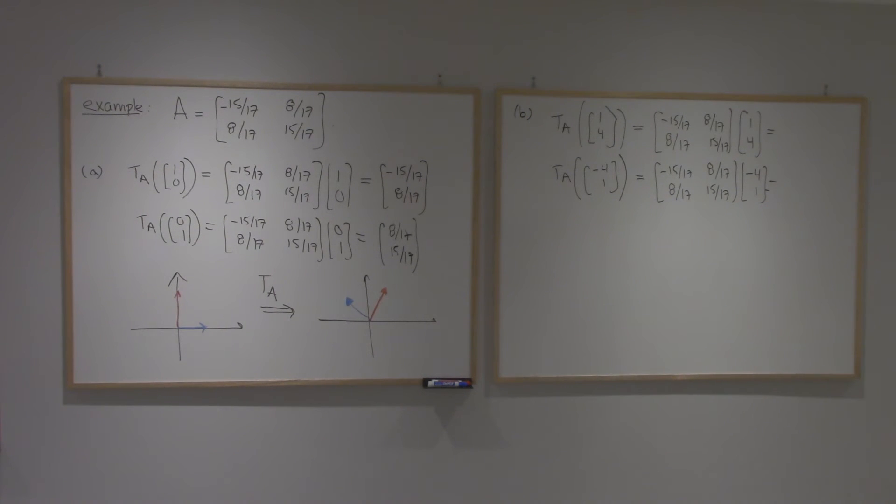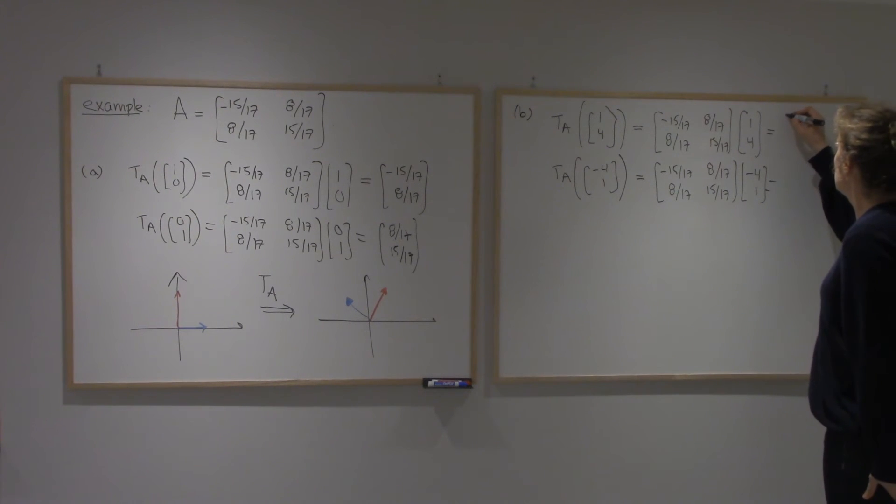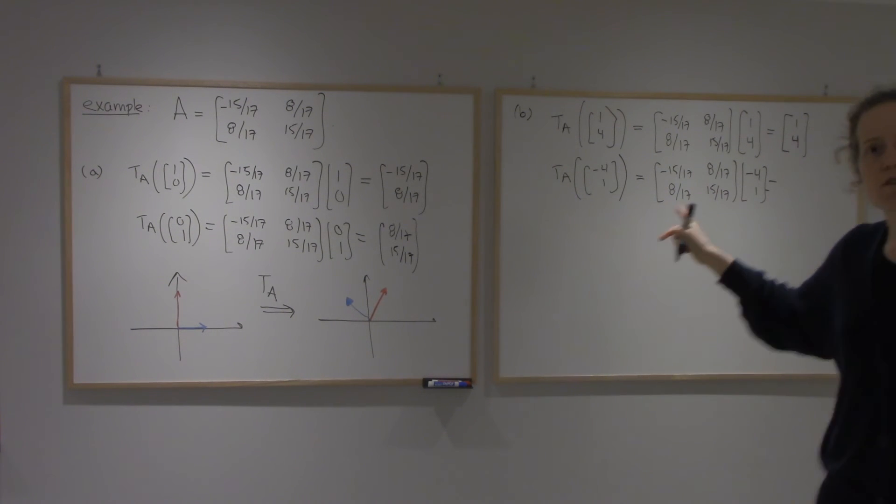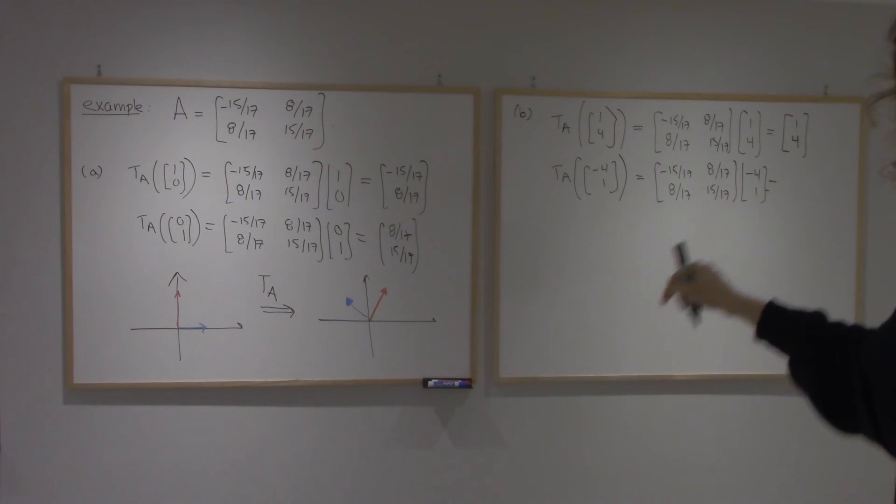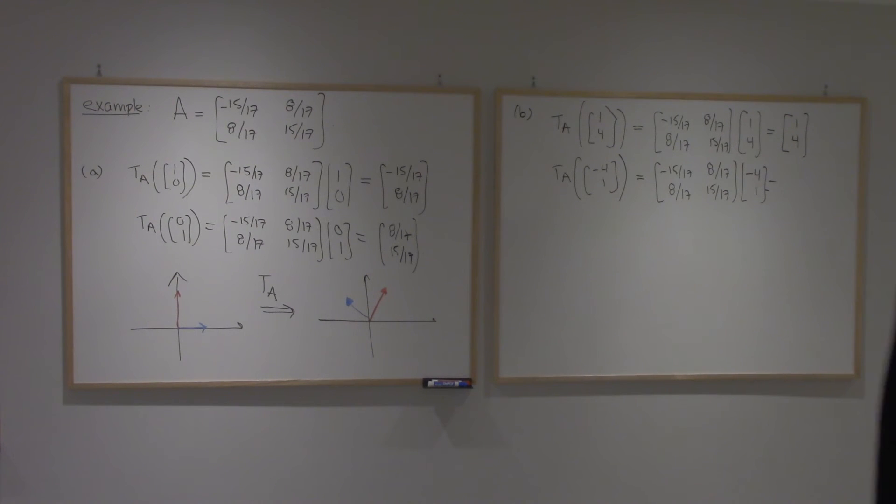So minus 15 plus 32, that's going to be 1. 8 plus 60, that's going to be 4. Now that's interesting. The vector (1, 4) isn't moved at all. Now if I take (-4, 1),